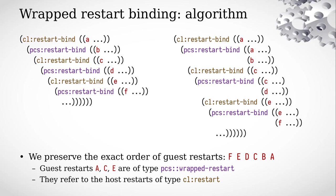A technical detail is that A, C, and E are of type PCS:wrapped-restart and they refer to the host restarts, but the end user doesn't need to care — for all purposes they are PCS restarts (a subtype, but still PCS restarts) that refer to host restarts of type CL:restart. This doesn't interfere with the dynamic extent of host restarts because when a host restart goes out of scope, so does the wrapped one.